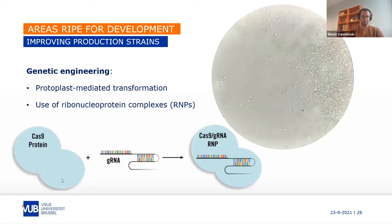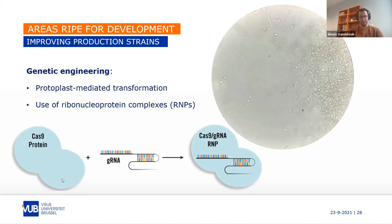Another way to improve production strains is through genetic engineering — this is the major focus of my PhD project. Recent advances in CRISPR-Cas9 technology enable bypassing some tedious species-specific requirements by using in vitro assembled ribonucleoprotein (RNP) complexes. These RNPs are transfected into protoplasts, which you obtain by enzymatically digesting the fungal cell wall, resulting in spherical cells.